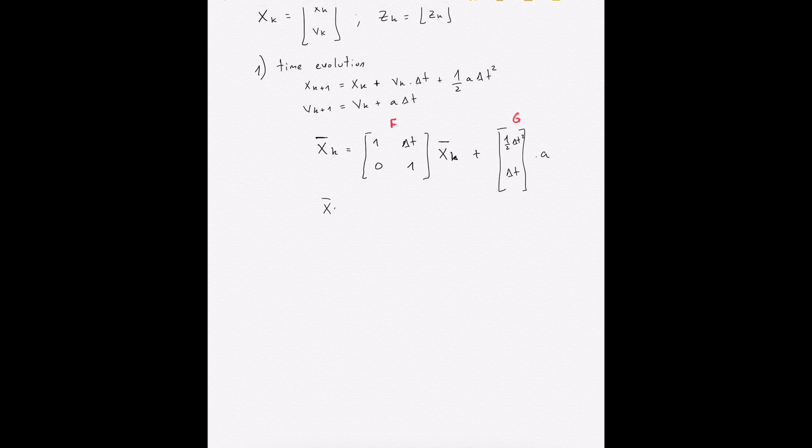This is the notation: x_k plus one equals F x_k plus G u_k. It has nothing to do with Brexit by the way.